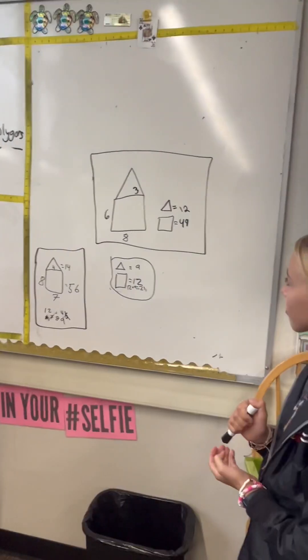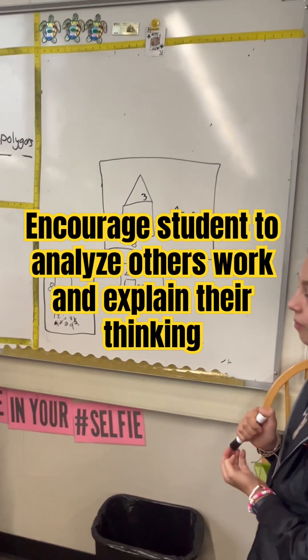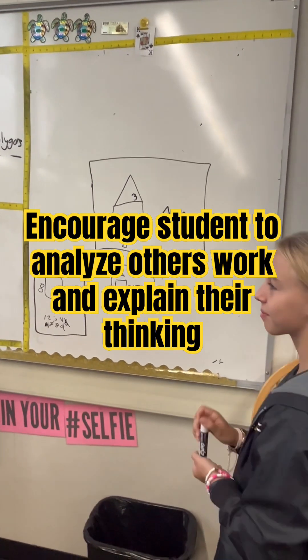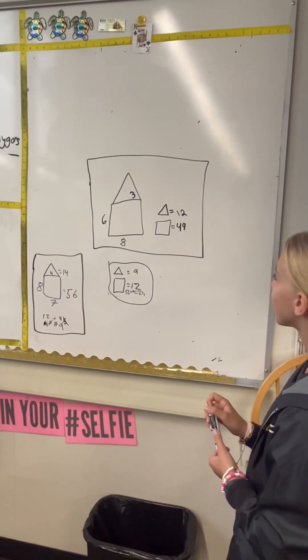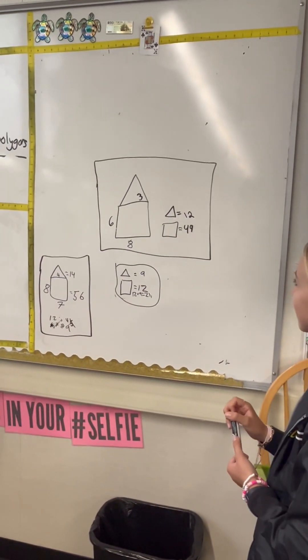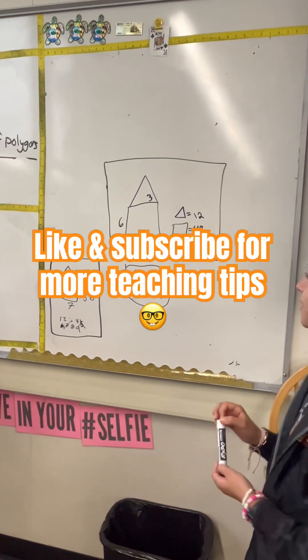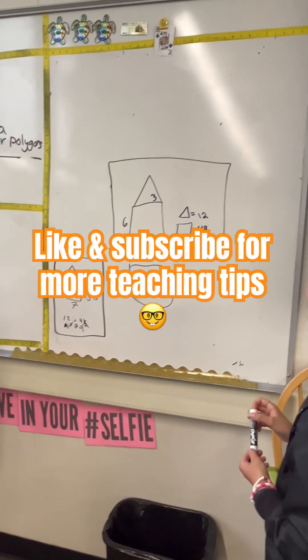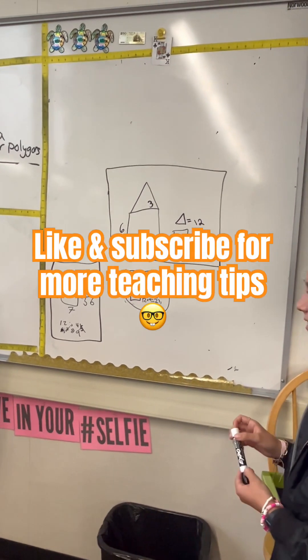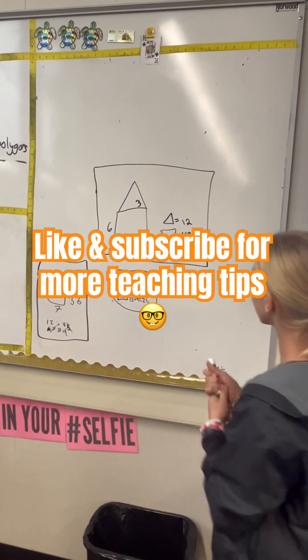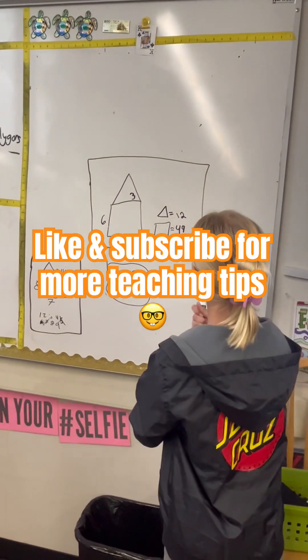How about this one? Tell me what the error is. Alethea? 6 times 8 is 40. 6 times 8 is 48. Do you guys see that? So you've got to change that to 8. And now you've actually used...